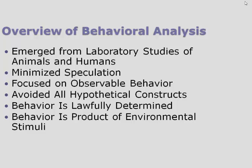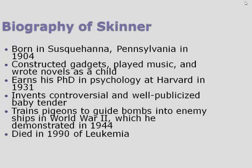Skinner is going to say those things may exist, but we don't know for sure — we're going to focus on what we can observe. He's going to avoid anything hypothetical if at all possible. He essentially says behavior is lawfully determined, meaning nothing happens at random. There is a scientific reason for all behavior. Skinner suggested behavior is definitely influenced by our environment, and he would go so far as to say we really don't have any free will at all — everything we do is determined by our environment.